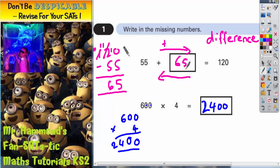Just to double check, we could do 55 add 65, and see if it gets us back to 120. So 55 add 65. 5 and 5 is 10, carry the 1. 5 and 6 is 11, plus that 1 is 12. So it does indeed get us back to 120.